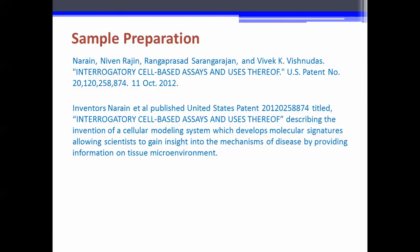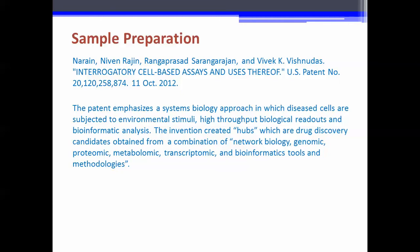Albuvoid is cited in US Patent 20120258874 by author Naren Nivjan et al., titled 'Interrogatory Cell-Based Assays and Uses Thereof.' The inventors published this patent describing the invention of a cellular modeling system which develops molecular signatures, allowing scientists to gain insight into mechanisms of disease by providing information on tissue microenvironment. The patent emphasizes a systems biology approach in which diseased cells are subjected to environmental stimuli, high-throughput biological readouts, and bioinformatic analysis.